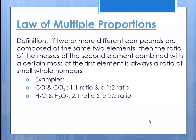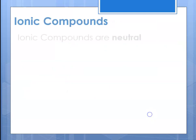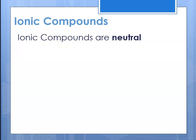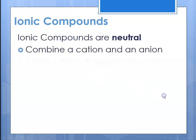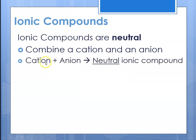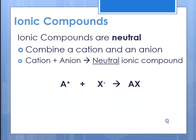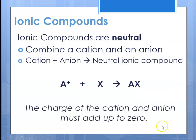The point of the law of multiple proportions is that no matter how elements combine, the ratios will always be some small whole number. With ionic compounds, whenever we talk about a compound, we're referring to a neutral substance. When combining a cation and an anion, the charges have to result in a neutral compound — whatever the charge of the positive part added to the charge of the negative part ends up being zero.